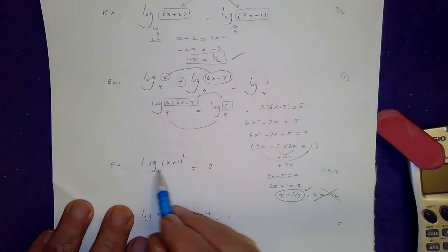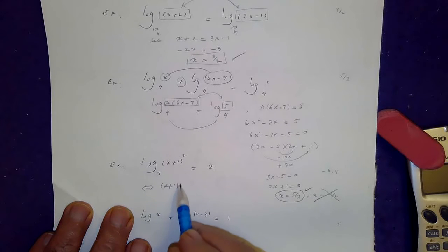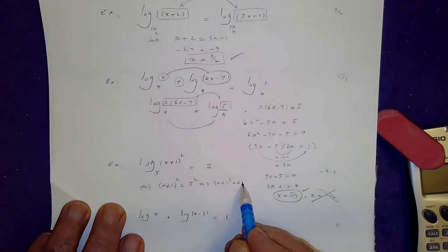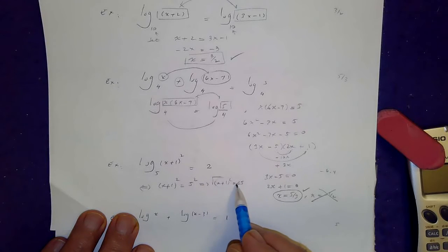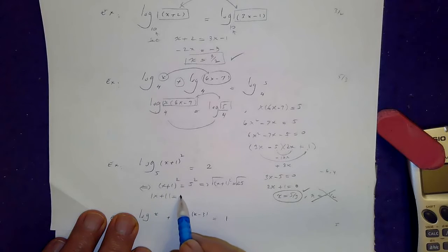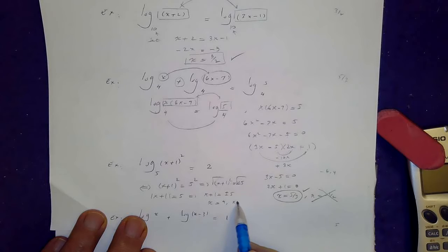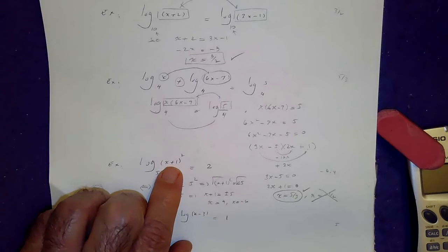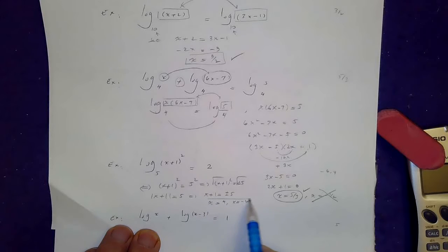Next is a single log on one side and a number on the other. Immediately change to exponential form: (x plus 1) squared equals 5 squared equals 25. Taking the square root of both sides gives the absolute value of x plus 1 equals 5, so x plus 1 equals plus or minus 5. Either x equals 4 or x equals negative 6. Even though x equals negative 6 is negative, negative 6 plus 1 is negative 5, and squaring makes it positive — so both answers are acceptable.